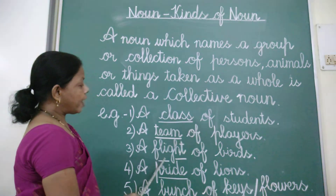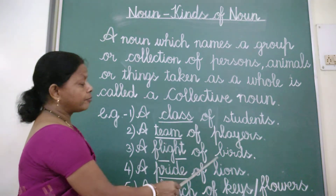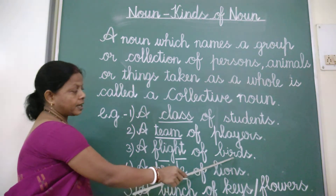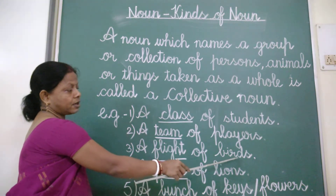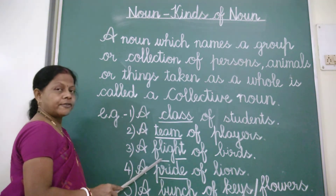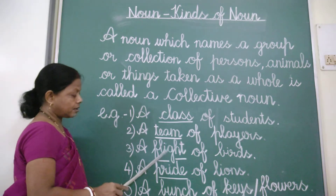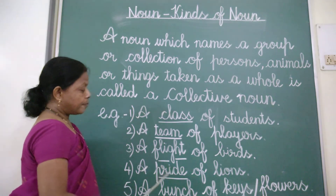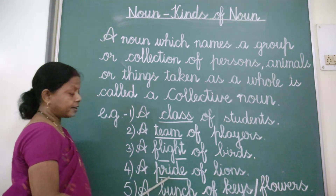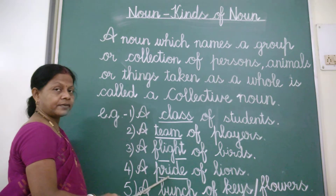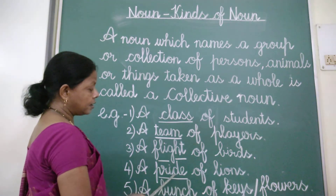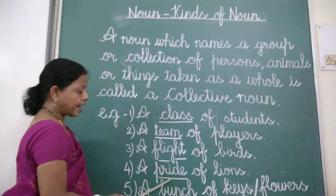A flight of birds — a collection or group of birds is known as a flight. A pride of lions — here 'pride' is a collective noun, and the group of lions is known as a pride.